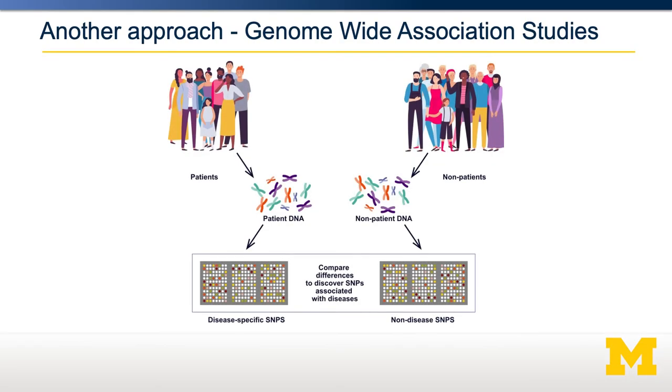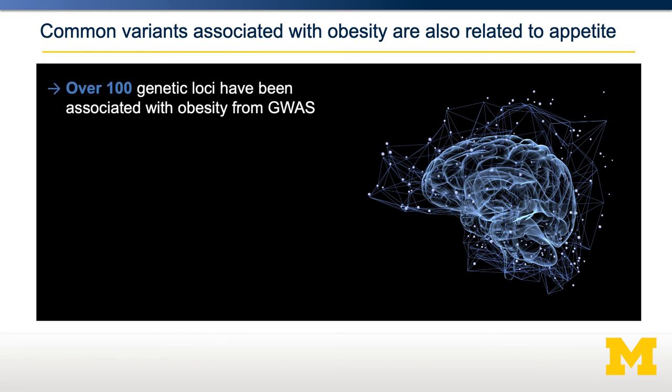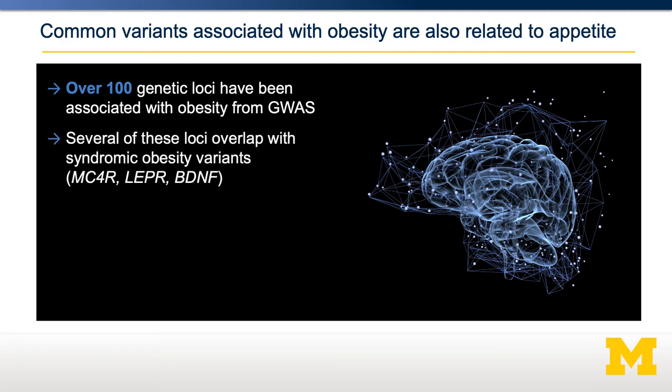Another approach is genome-wide association studies. Rather than connecting family trees, GWAS takes DNA from cases — patients with obesity — and controls — patients without obesity — and looks for associations between specific DNA variants and obesity risk. Using this approach, over 100 individual genetic locations have been identified as associated with obesity. Several overlap with variants found through pedigree analyses, including the melanocortin receptor, leptin receptor, and BDNF.